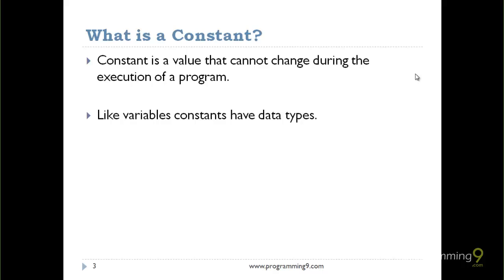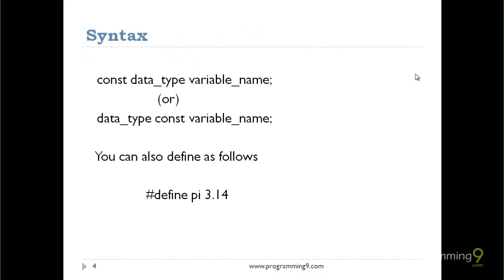In the previous session, we discussed variables. A variable is a value that can change during program execution. Just like variables, constants have data types like int, float, double, char, etc.